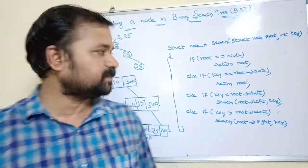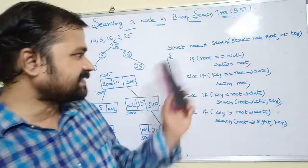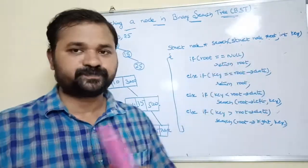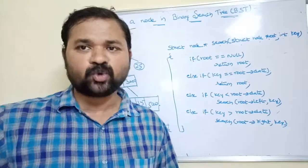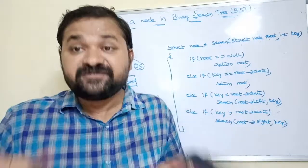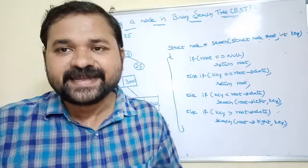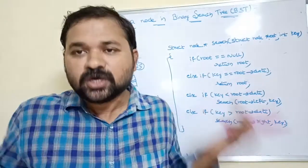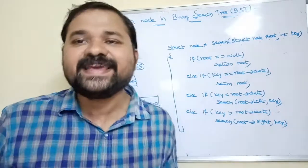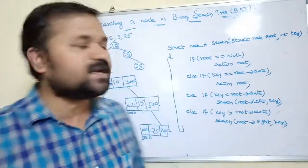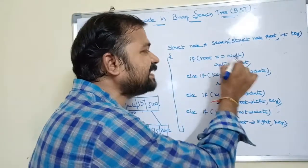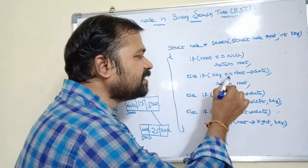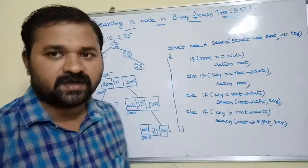We pass the address of the root node as well as the key value. The first condition is: if root == null, return root. We say root is null when the tree is empty. So if the tree is empty, root is null and we return null.